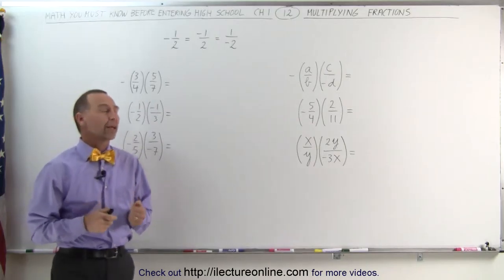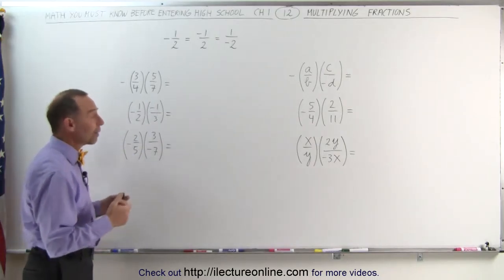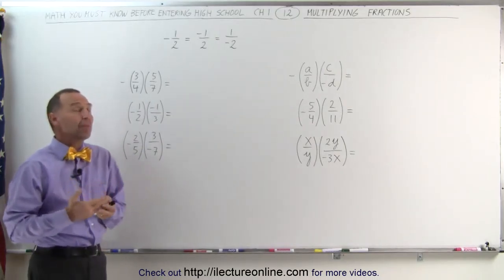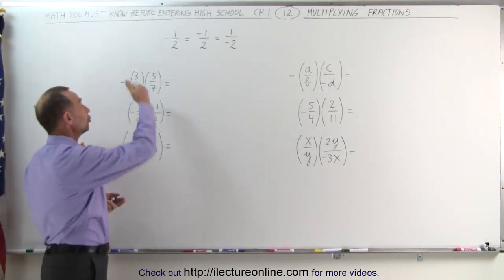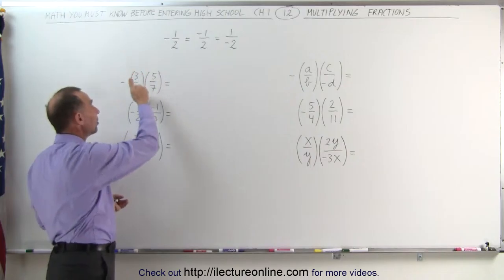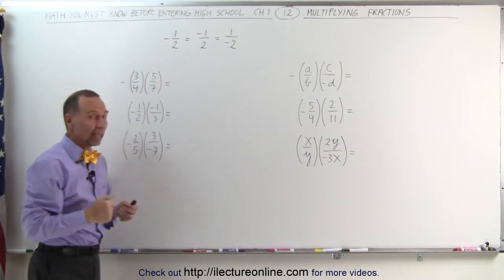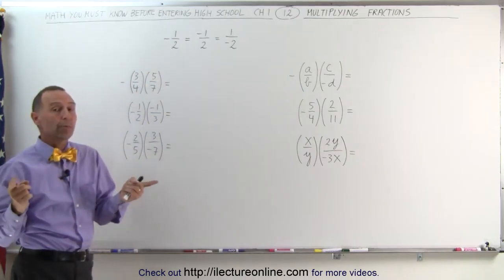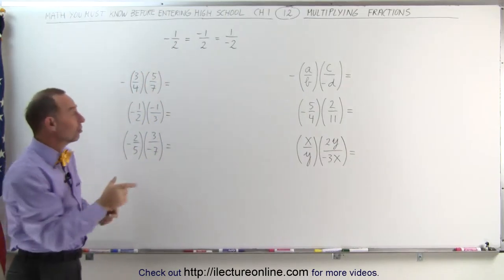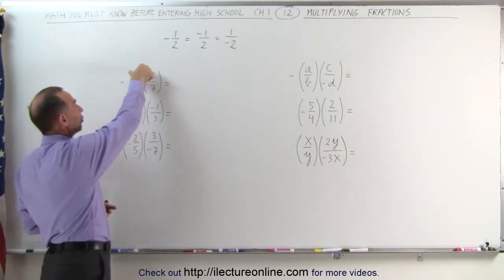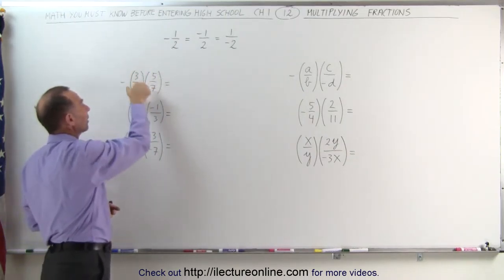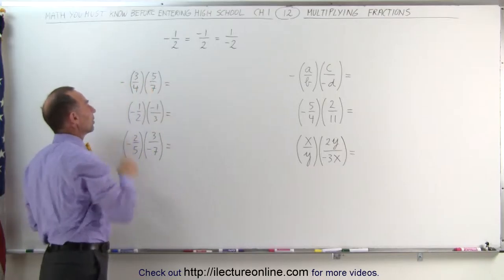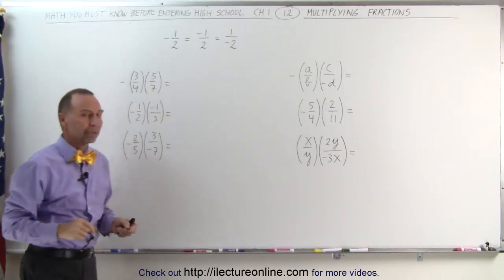There are two things we need to take care of. First of all, when we have fractions, that means there are numerators and denominators. The rule is: when we multiply fractions, we multiply the numerators together, and we multiply the denominators together.